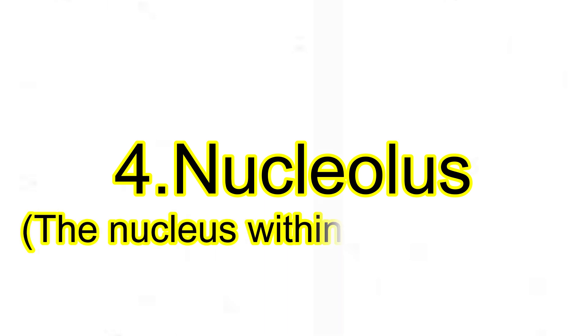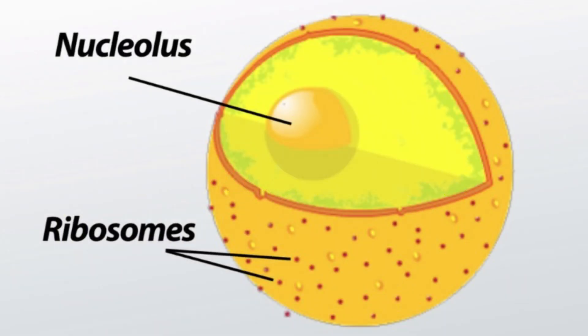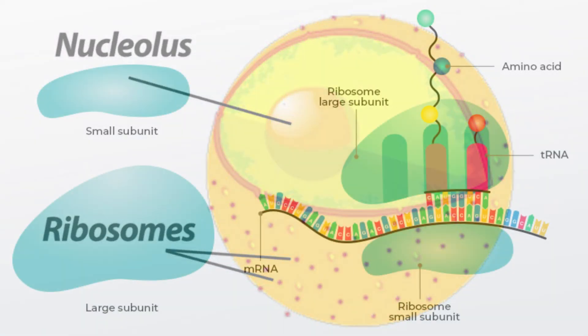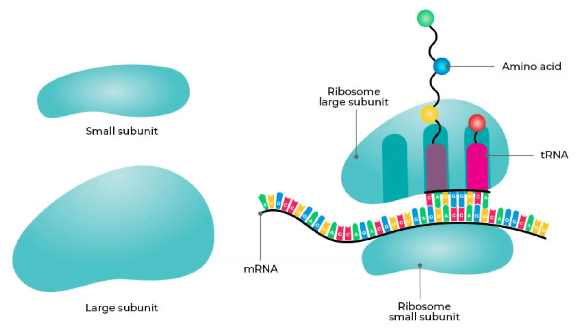Four, nucleolus. The nucleus within the nucleus. The nucleolus is where ribosomes are made, those tiny factories responsible for building proteins. No ribosomes, no proteins, no life.